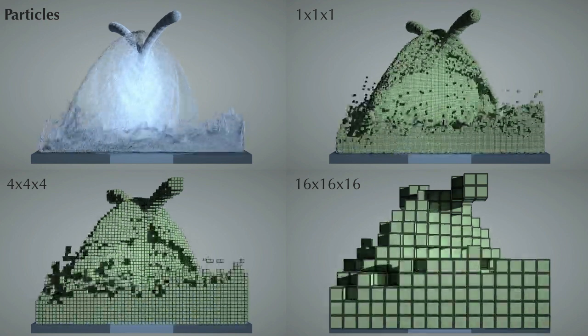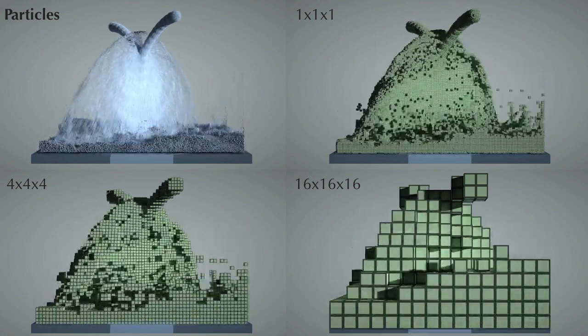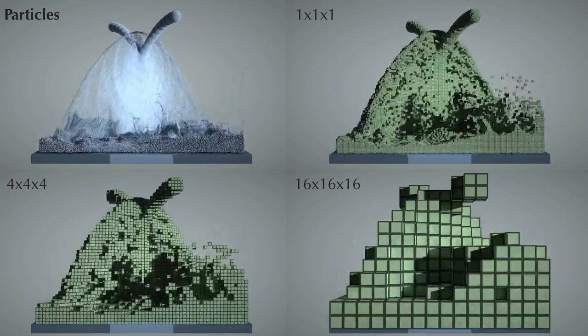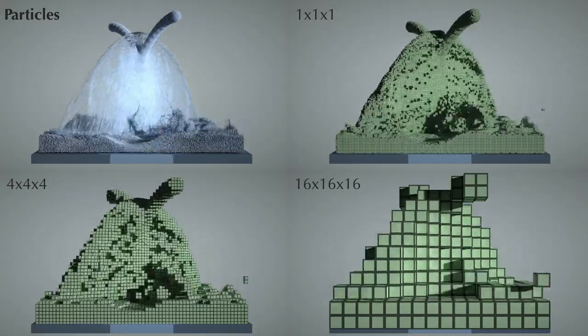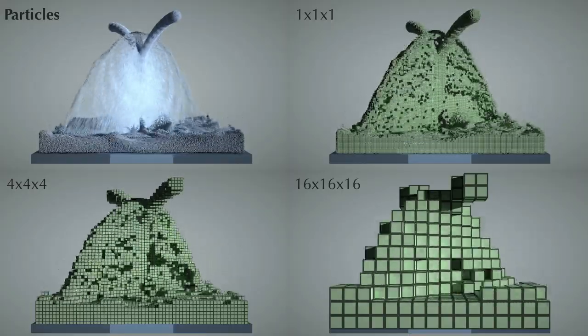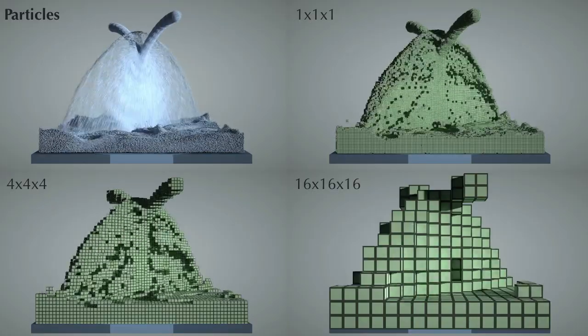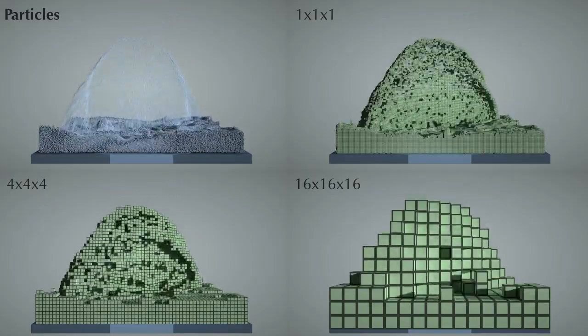To concentrate computation on sparse regions of interest, multi-level sparse voxel data structures are studied extensively. Here's a fluid simulation using Tai Chi programs with three levels of voxels, with sizes varying from 1³ to 16³.